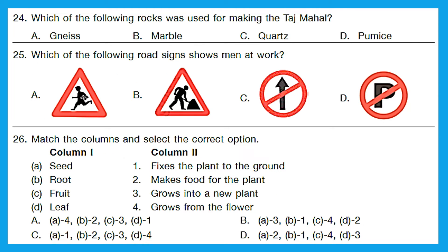Question 24. Which of the following rocks are used for making the Taj Mahal? The right answer here is option B, marble. Question 25. Which of the following road signs shows men at work? The right answer over here is option B. Because A is school ahead, C is no entry and D is no parking, whereas B shows men at work.